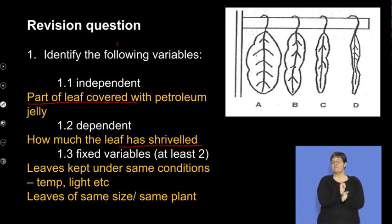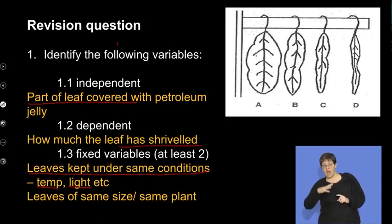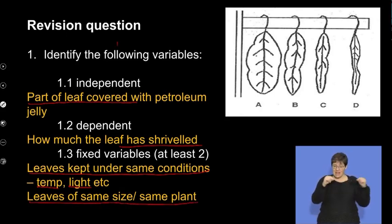Fixed variables. What do you need to keep exactly the same? Here you need to think of the other factors that would affect transpiration. You keep the leaves in exactly the same conditions. For example, they must all have the same temperature, the same light, the same humidity, the same wind, so that you know that it's not the temperature, light, humidity, or wind that is actually causing the leaves to behave in a different way. Then the last one is you need to have leaves that are basically the same size to start, and you need to have leaves that are from the same plant. And we'll talk about later why you need to have leaves from the same plant.